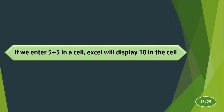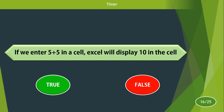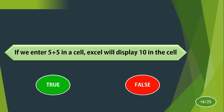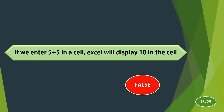If we enter 5 plus 5 in a cell, Excel will display 10 in that cell. Is it true or false? The answer is false. If you enter 5 plus 5 in a cell, Excel will display 5 plus 5 only. If you start with an equal sign, only then it will calculate. So if you enter equals 5 plus 5, then Excel will display 10. The answer is false.